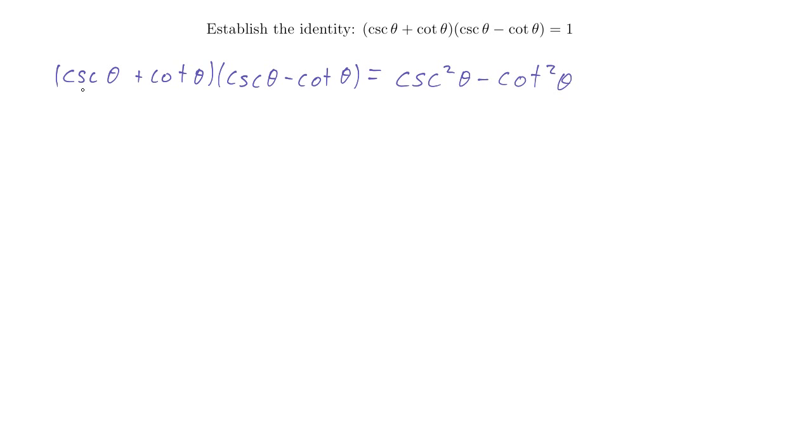And remember, if you're doing the FOIL method, you need to do the outers and the inners. But in this case, one of them will be positive and one will be the same thing, only negative, so they'll cancel out.